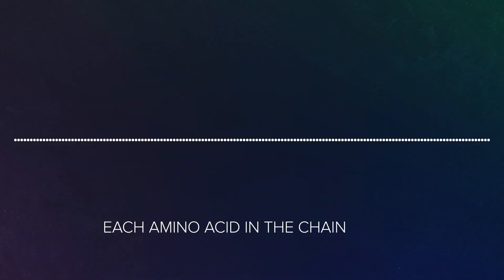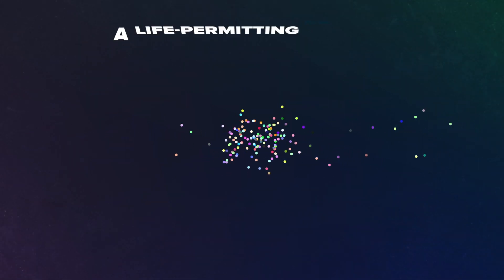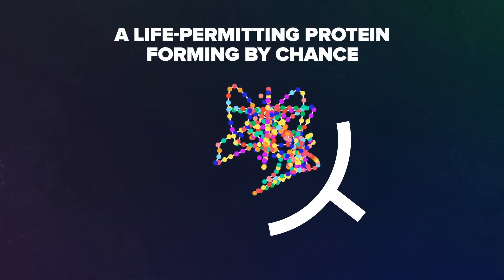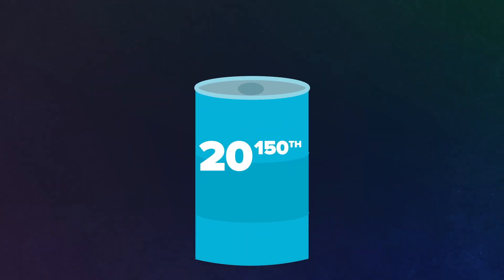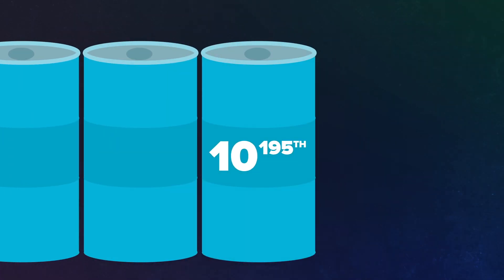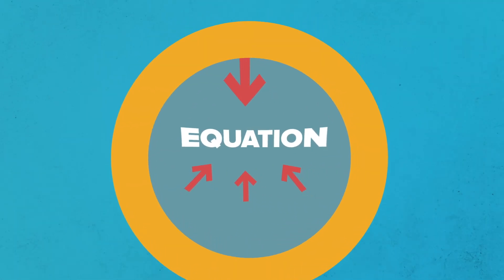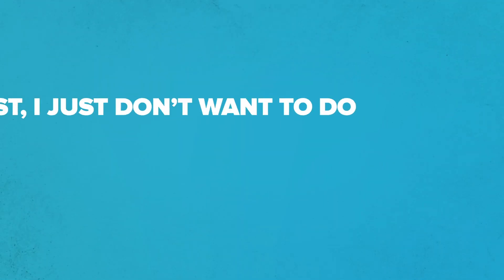So, if each amino acid in the chain of 150 has roughly 20 possible variations, that would mean a life-permitting protein forming by chance would be 20 to the 150th. Now, you reduce that down, you get 10 to the 195th. That's a 1 with 195 zeros after it. But there are other rare sequences that can work, and we would have to factor that into the equation, but I'll be honest, I just don't want to do that.